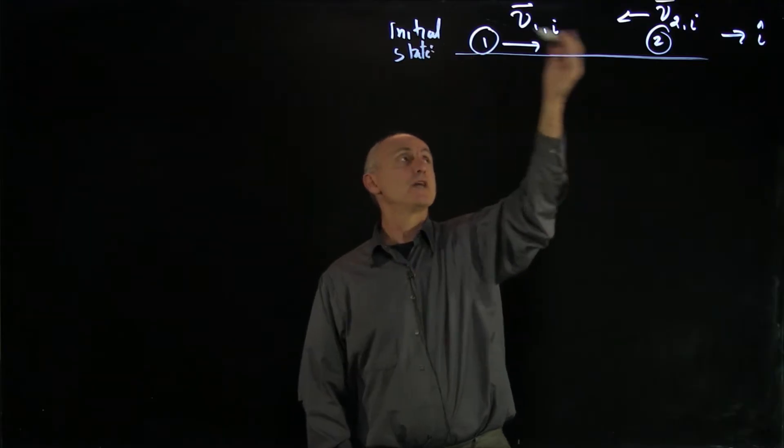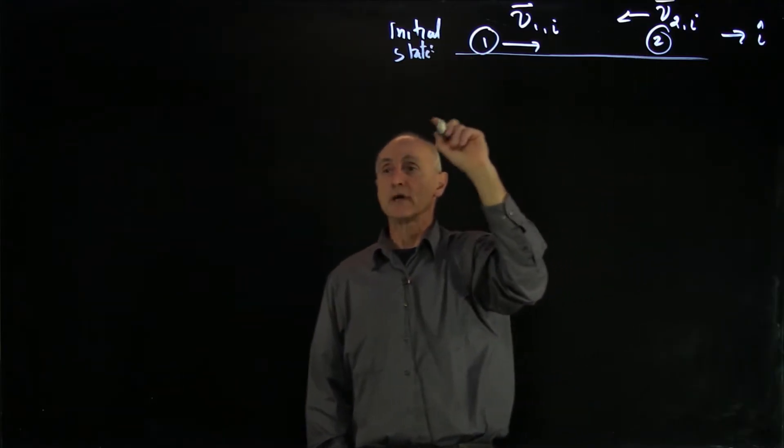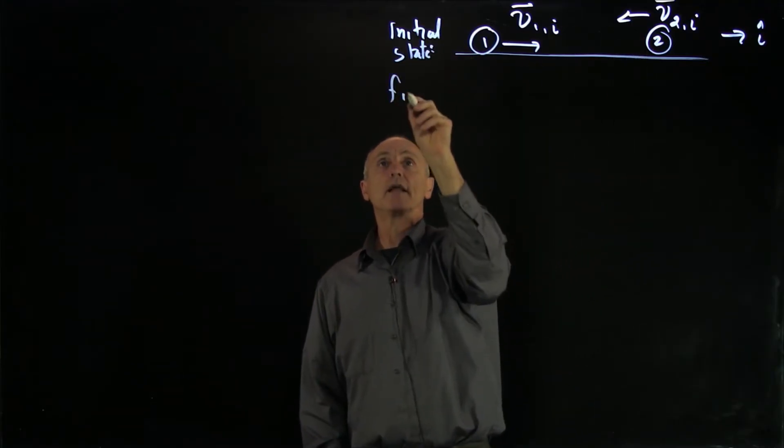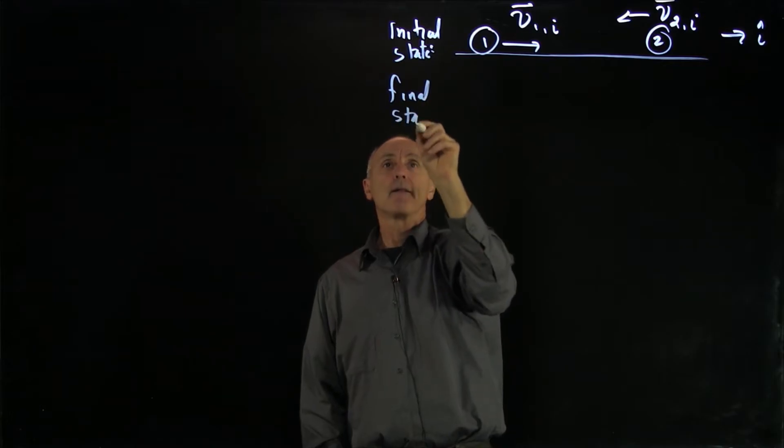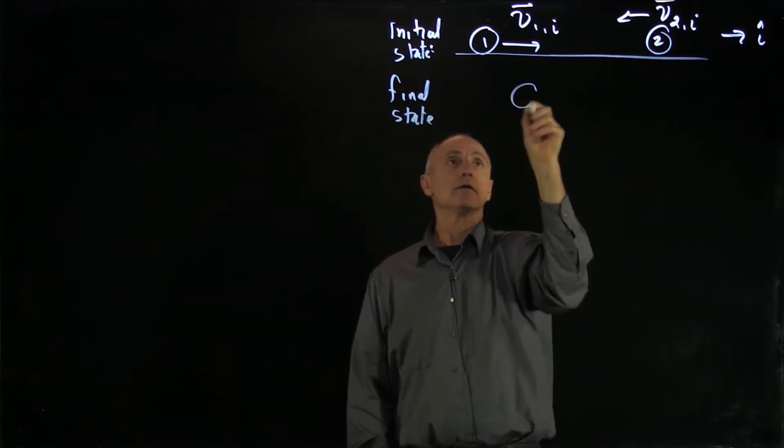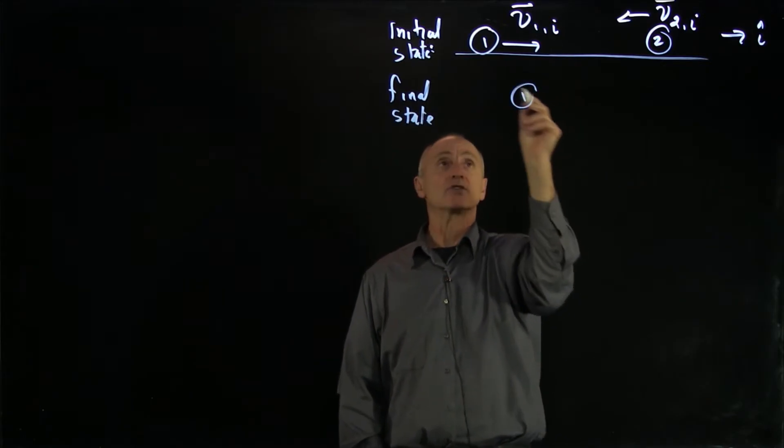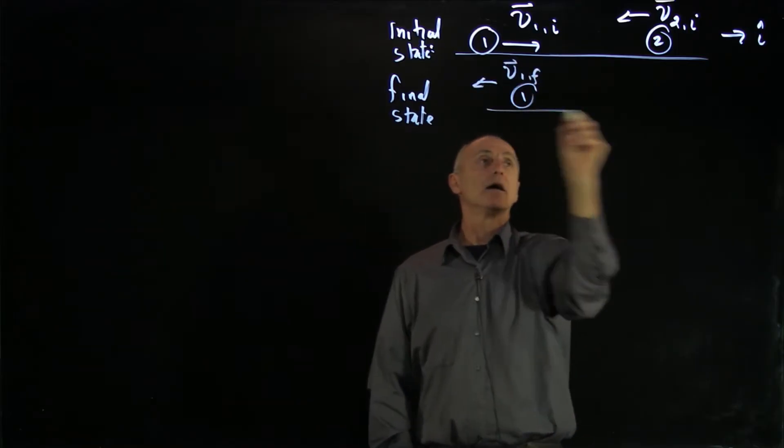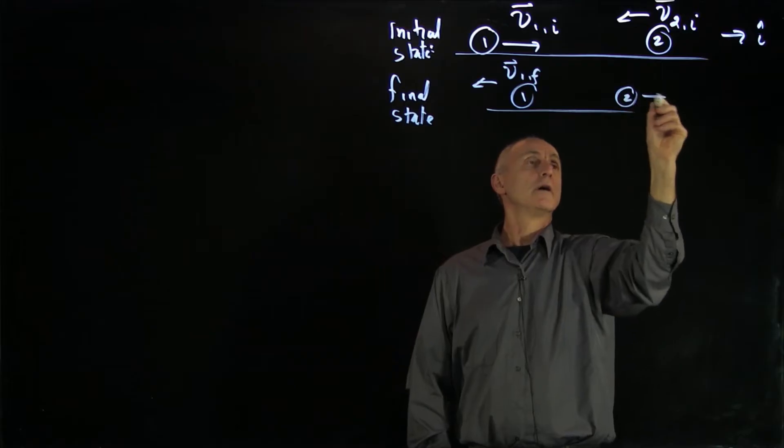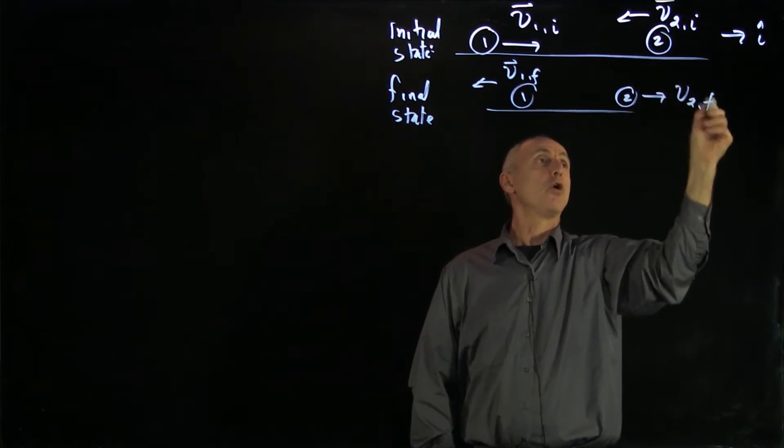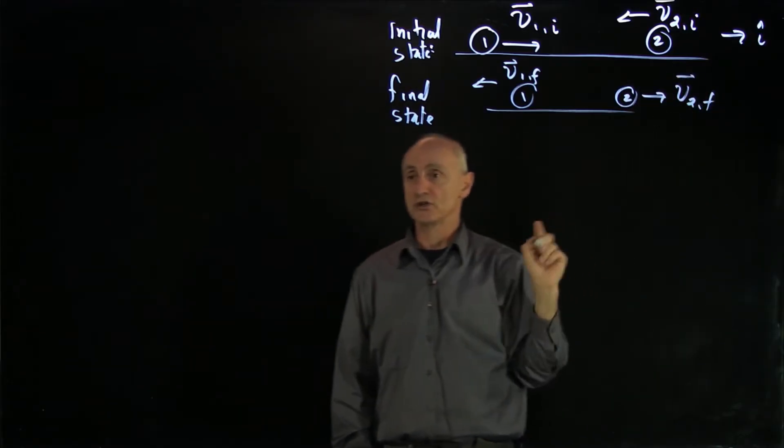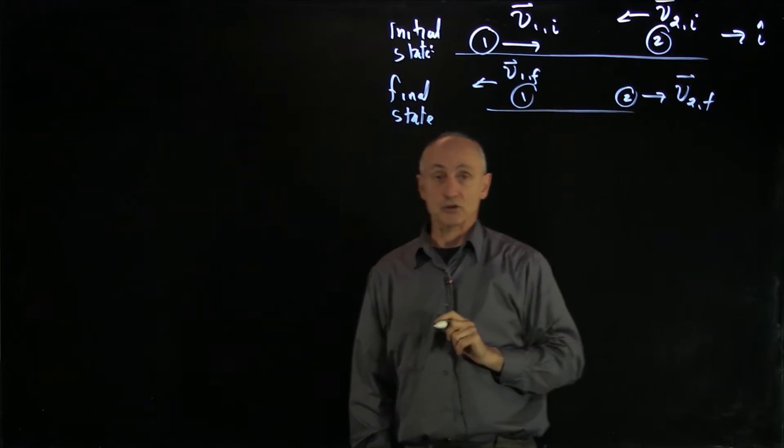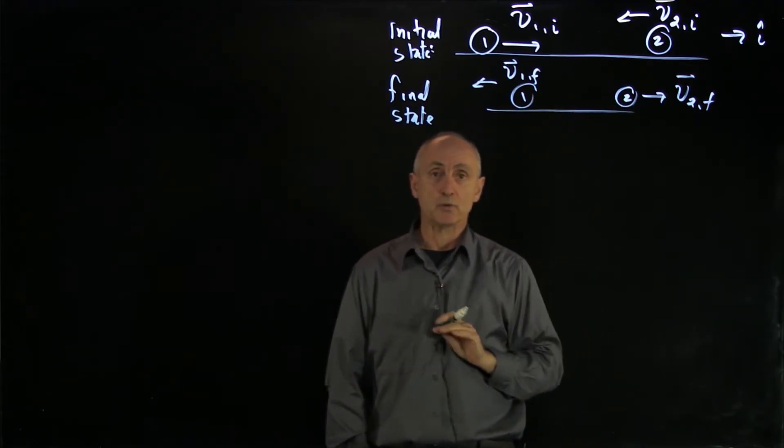And here you can imagine we're going to use a ground reference frame, so both objects are moving. And our final state has object 1, we don't know which way it's going, we can just say it bounced back. And object 2 also bounced back. But the goal of our problem is to determine these vectors, and by knowing the vectors we know which way they go.